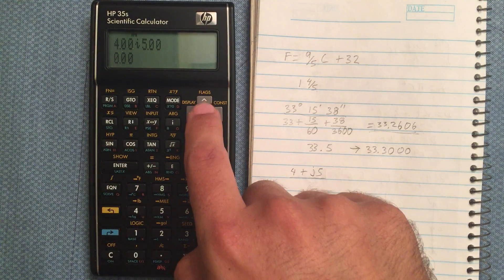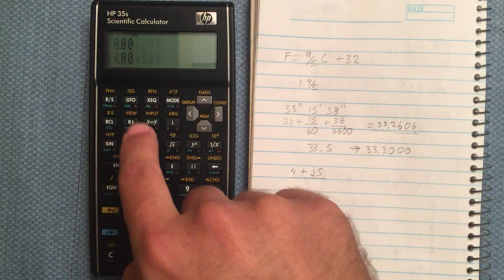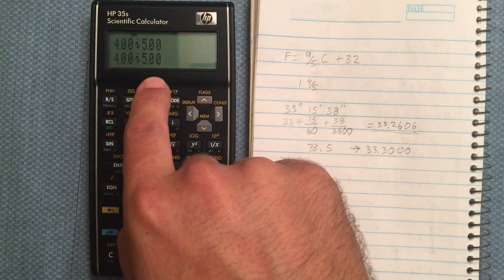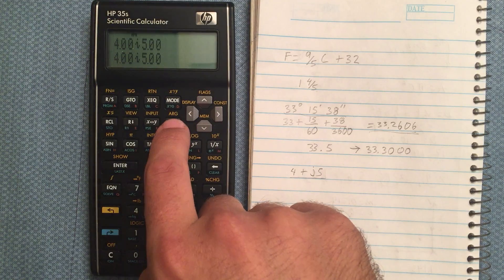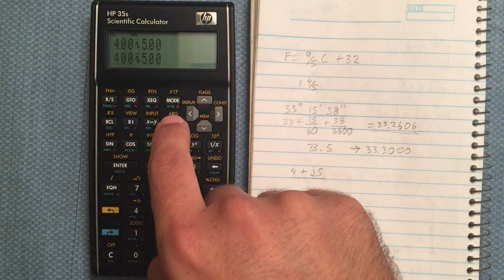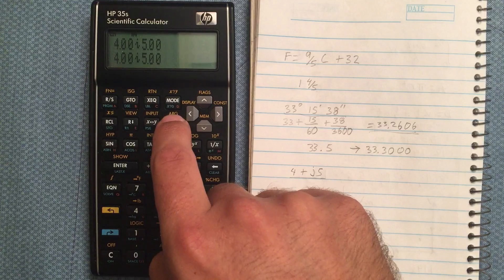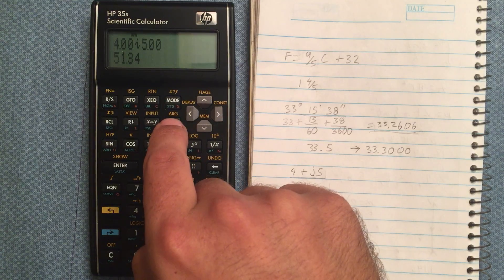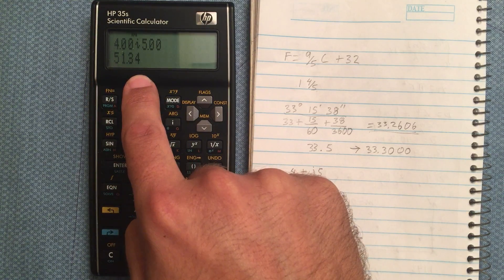Now this also works for the angle. That is the argument up here, this gold shift and argument. And if I recall, it was 51 degrees or so. That gives me the argument.